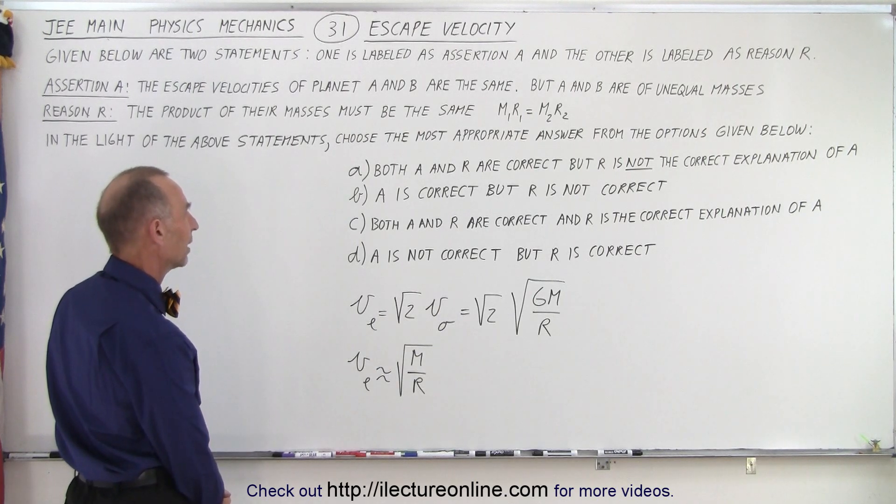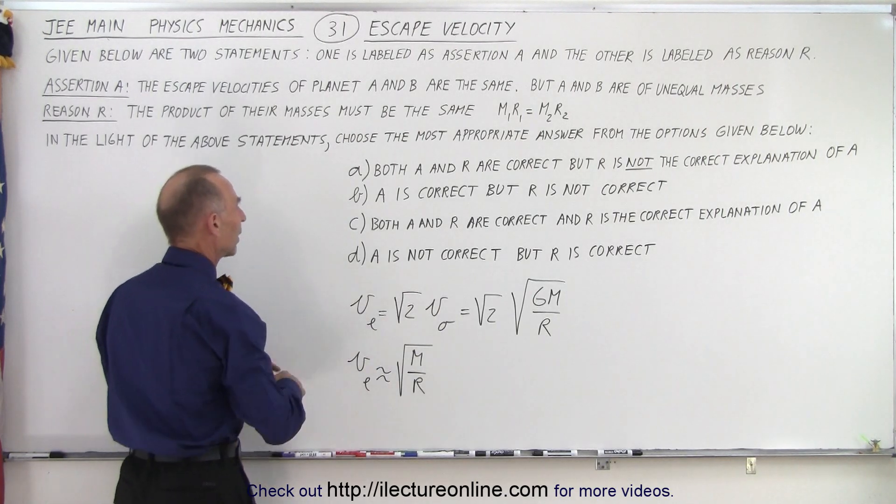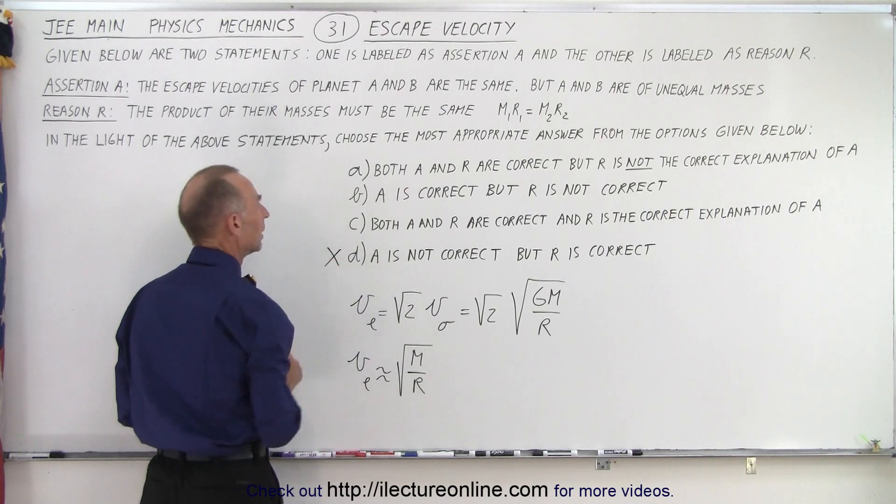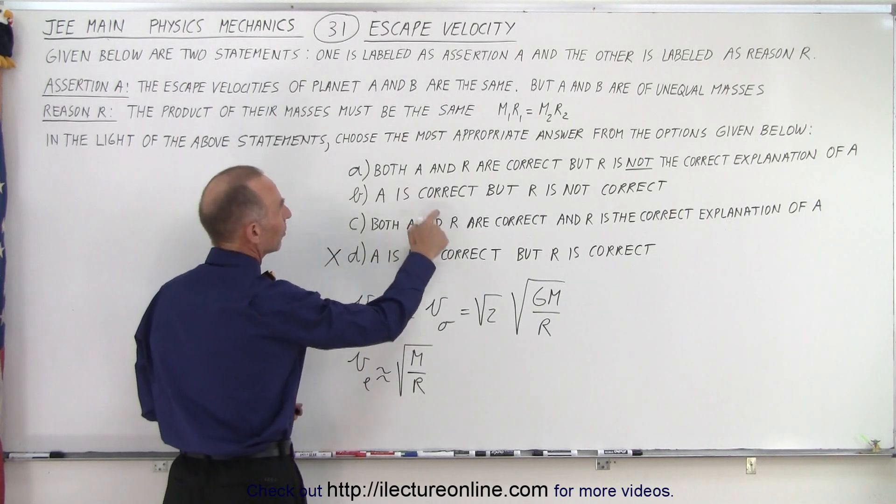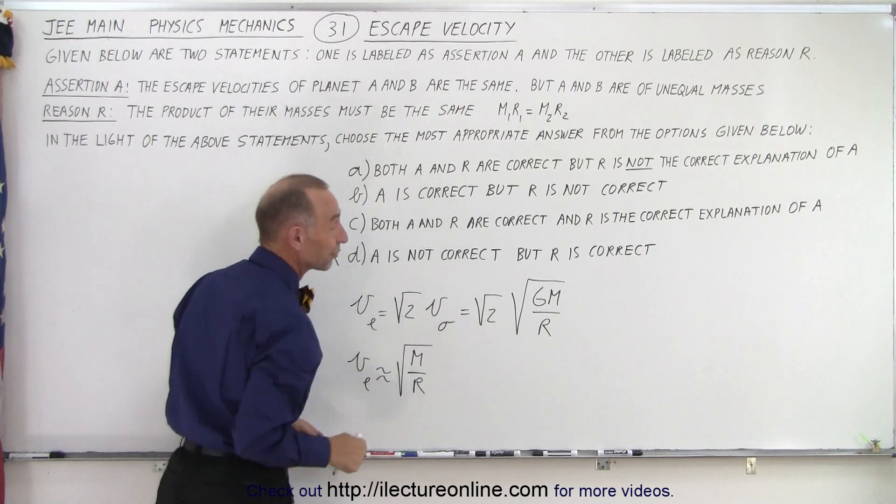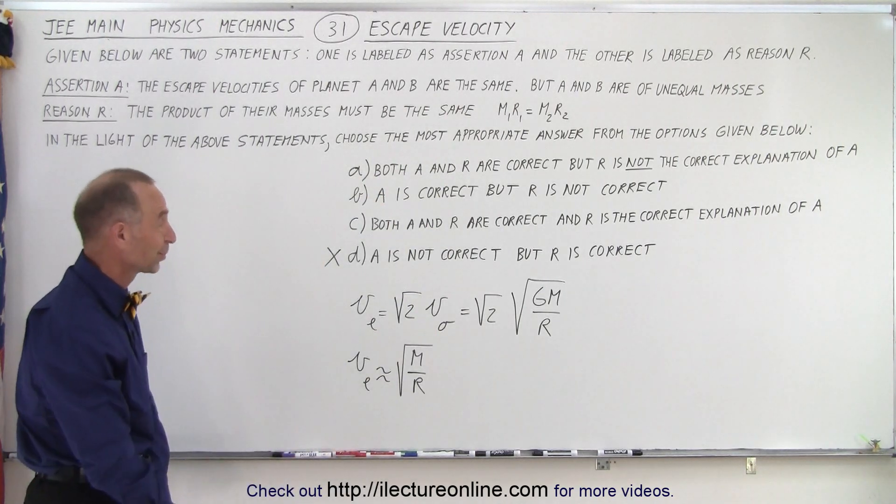Can we already eliminate some answers? A is not correct, so that's wrong. Both A and R are correct. A and R are correct. A is correct. So, the other three answers are still possible.